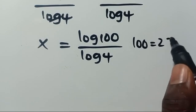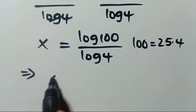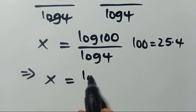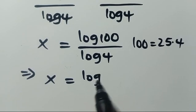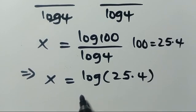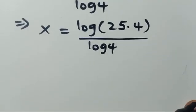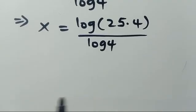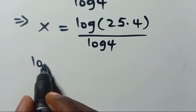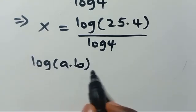Now recall that we can write 100 as 25 times 4. So this implies x equals log of 25 times 4, divided by log 4. Recall that from the law of logarithms, log of a times b equals log a plus log b.